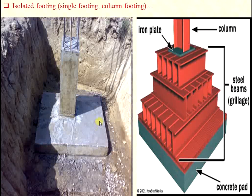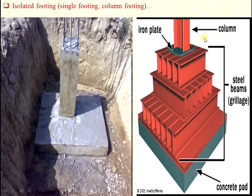This type of isolated footing is used for MIDC or industrial applications, which has a concrete pad. It involves an iron plate with a column or steel column — a steel beam called a grillage — and this is useful for truss work.